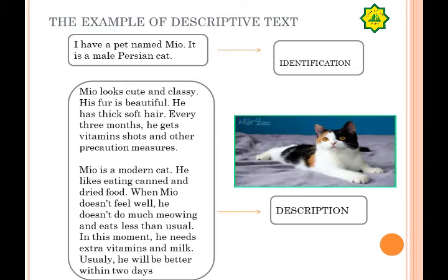Artinya: Saya memiliki seekor kucing namanya Mio. Mio ini seekor kucing Persia jantan. Mio adalah kucing yang lucu dan unik. Bulunya cantik, dia memiliki bulu yang lembut dan tipis. Setiap tiga bulan dia mengkonsumsi vitamin dan juga hal-hal lain untuk pencegahan penyakit. Mio adalah seekor kucing yang modern, dia suka makan makanan kaleng dan juga makanan kering. Ketika dia tidak merasa sehat, dia tidak melakukan banyak hal — tidak mau mengeong dan makannya lebih sedikit daripada biasanya. Pada saat itu dia membutuhkan banyak vitamin dan susu. Biasanya dia akan lebih baik dalam dua hari.